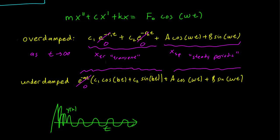Many problems in this section will ask you to identify the transient and steady periodic solutions — and this is just what they are. Observe that the transient solutions come from the homogeneous equation; in other words, both of these come from mx'' + cx' + kx = 0.